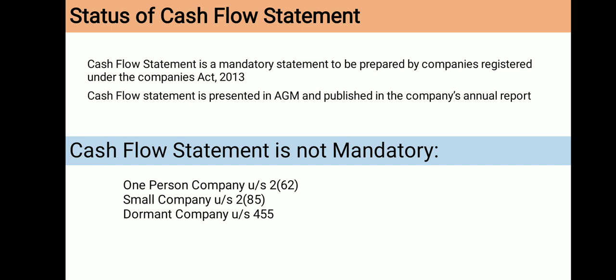There are different types of meetings in a company: Statutory Meeting, Annual General Meeting, Extraordinary General Meeting, and other meetings. Cash Flow Statement is published in the company's Annual Report. An Annual Report is a formal financial report that is published yearly and sent to company stockholders and various other parties.